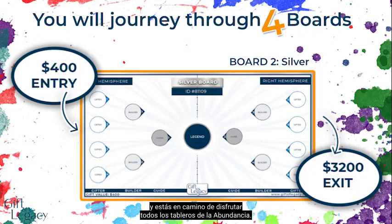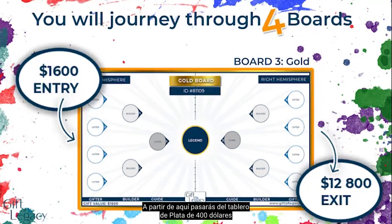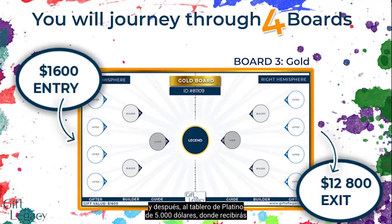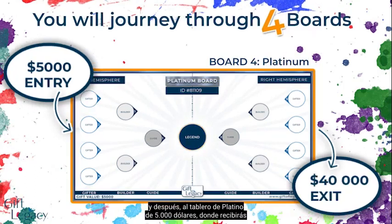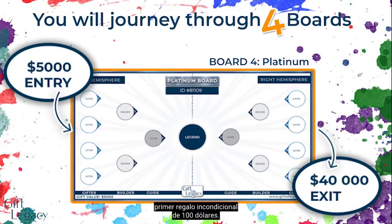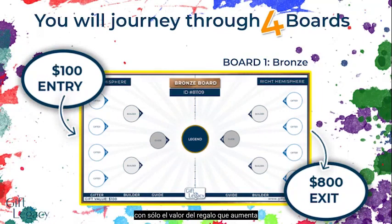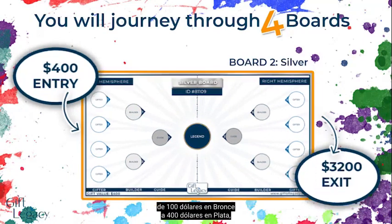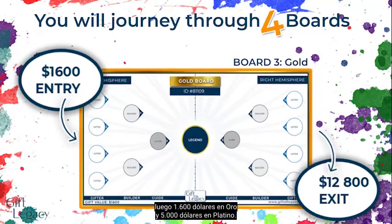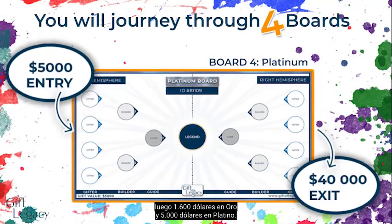Step two: take $400 from your $800 gifts and enter the silver board, where you will receive $3,200 in gifts. You still have $300 in your pocket and you're well on your way to riding all the boards of abundance. From here you will go from the $400 silver board to the $1,600 gold board where you will receive $12,800 in gifts, to the $5,000 platinum board where you will receive $40,000 in gifts — all perpetual, and all because of that first $100 unconditional gift. The silver, gold, and platinum boards work the same as bronze, with only the gift value increasing from $100 on bronze, to $400 on silver, then $1,600 on gold, and $5,000 on platinum.